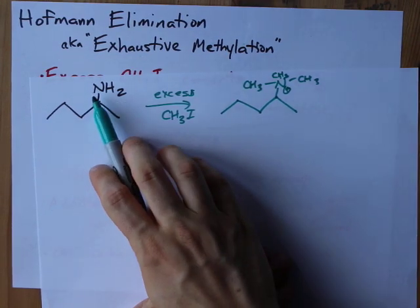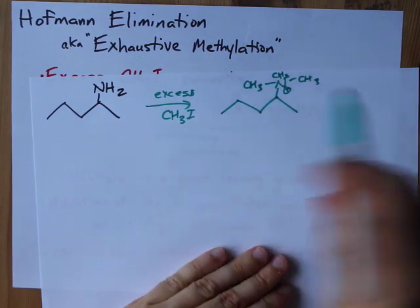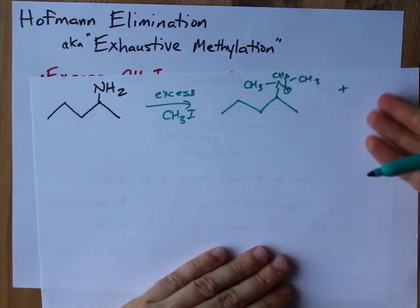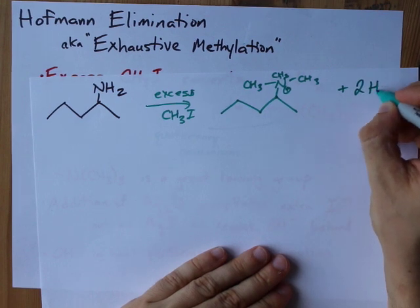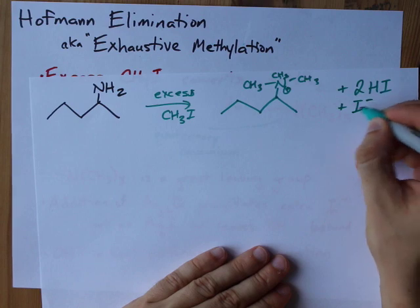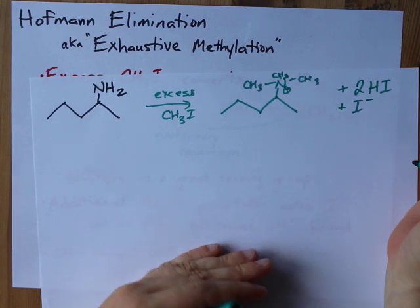Those H's that were originally on the amine combine with 2 of the iodides, and we have 3 iodides to deal with because we have 3 methyl groups here, to make 2 HI. And then the extra I- is the counter ion to this positive formal charge here.